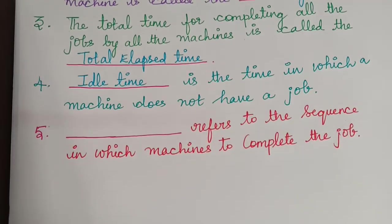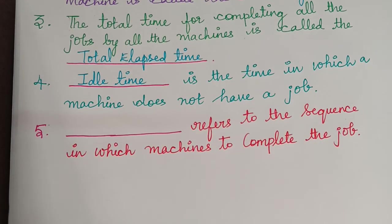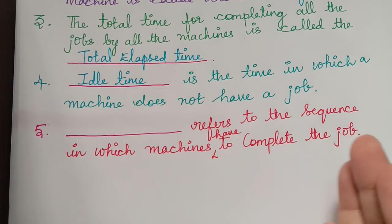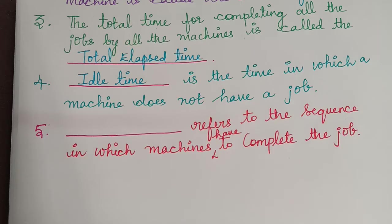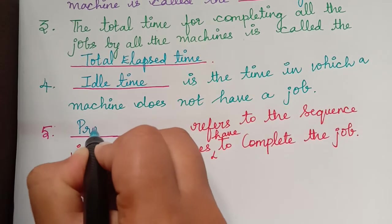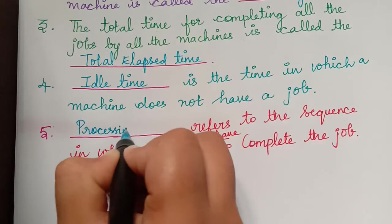The next question is: dash refers to the sequence in which the machines have to complete the job. The jobs will be completed in a particular sequence, and that sequence is known as the processing order. So the answer is processing order.